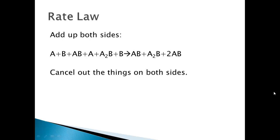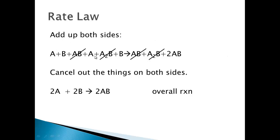After canceling AB and A2B from both sides, we look at what's left: two A's, two B's, and 2AB. This is our overall reaction — the same kind of balanced equation we wrote last year, as if the reaction took place in one single step, even though it actually occurs through a series of smaller steps.